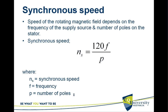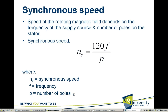It is dependent on the supply frequency and also the number of poles on the stator. The synchronous speed is therefore defined as NS = 120F / P, where F is the frequency in hertz and P is the number of poles.